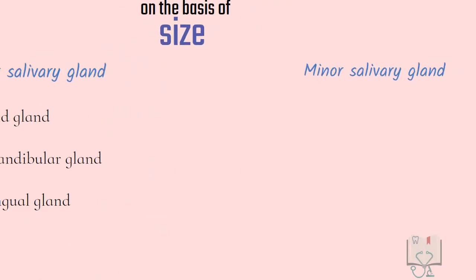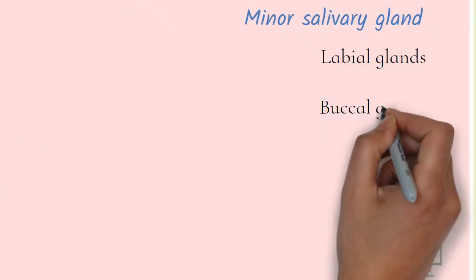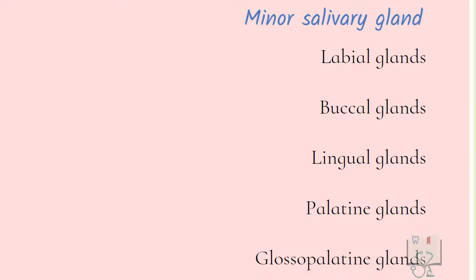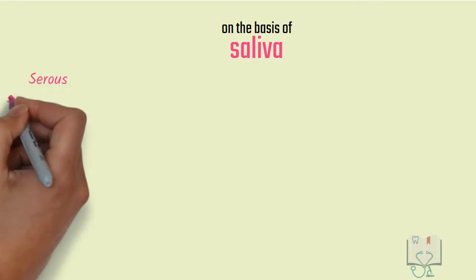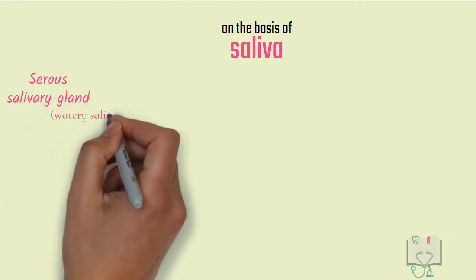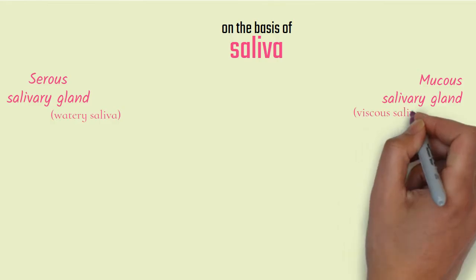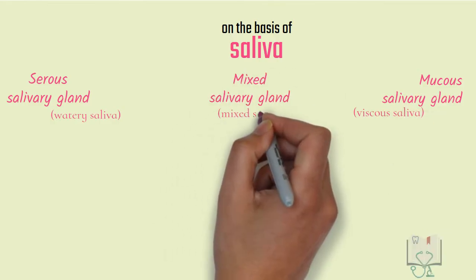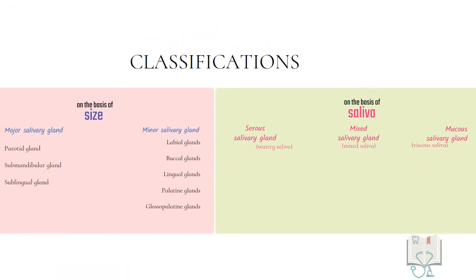Minor salivary glands are numerous and named according to their location — labial gland, buccal gland, lingual gland, palatine gland, and glossopalatine gland. On the basis of type of saliva, they are classified as serous salivary glands (watery saliva), mucous salivary glands (viscous saliva), and mixed salivary glands (mixture of both).